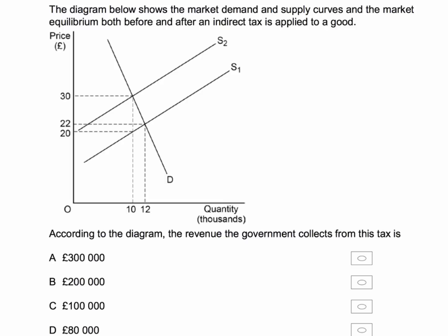Here's the question. The diagram below shows the market demand and supply curves and the market equilibrium both before and after an indirect tax has been applied to the good. Here's our diagram and our question is: according to the diagram, the revenue the government collects from the tax is what level?